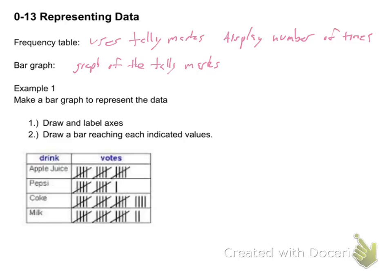As our first example, I want you to make a bar graph to represent the data. I got a two-step approach there. The first step is draw and label axes. And then I want you, on your axes, make sure you're putting that you're going by twos or threes or fives. Draw a bar reaching each individual indicated value.